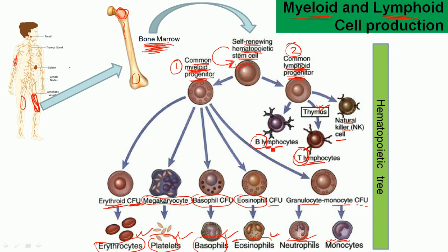Since B lymphocytes are produced and matured in the bone marrow, they are called B lymphocytes. This lineage diagram is called the hematopoietic tree, which shows how our blood cells are produced from the bone marrow.